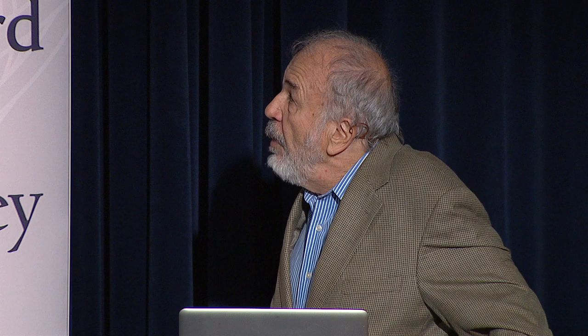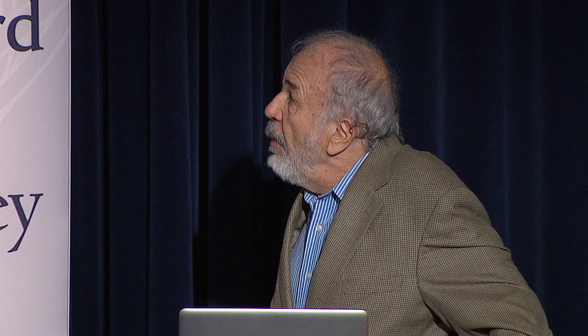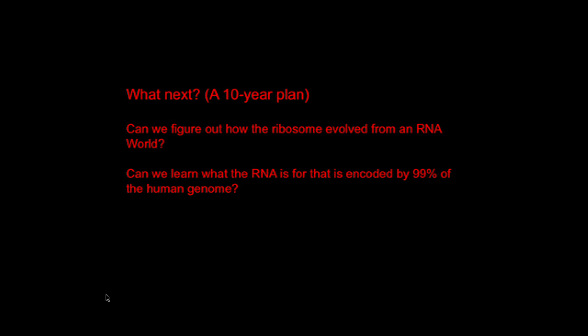We're asked about what next — a 10-year plan. One question is: can we figure out how the ribosome evolved from an RNA world? This is an experiment we can't do directly, but we're trying to get a plausible series of events starting with the periodic table and arriving at life. Another big question, addressed by the RNA Center at UC Santa Cruz, is: can we learn what the RNA is for that is encoded by 99% of the human genome?